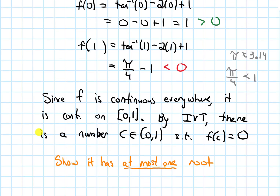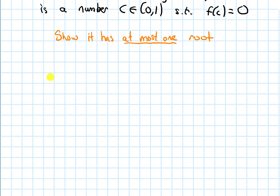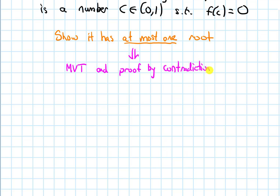Now we are ready for part 2 of the argument. I want to show that we have at most one root. The idea for this is going to be to use the Mean Value Theorem and what's called a proof by contradiction.